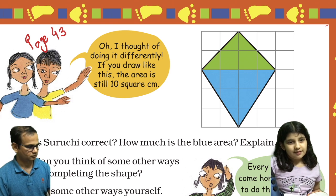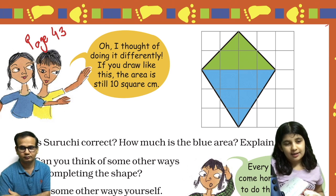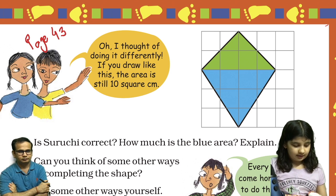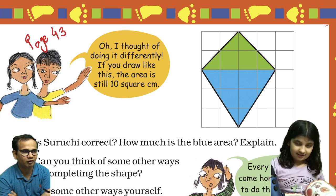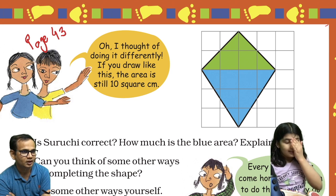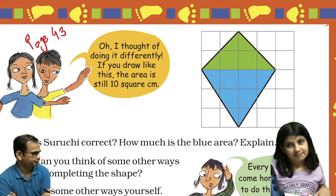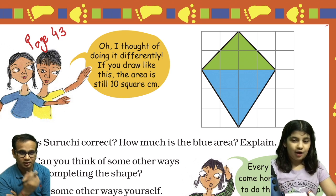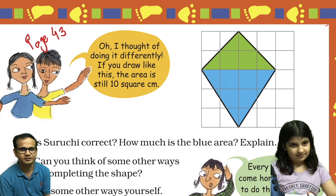Welcome back to this channel. Today we will be covering NCERT Book Math Magic, Class 5, Chapter 3, page number 43. The chapter name is 'How Many Squares.' Let's start without wasting time.